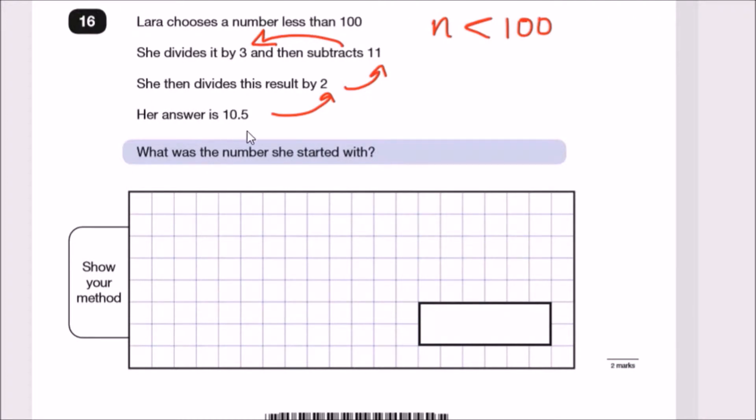Let's start from the back. It said that she divides a certain result by 2 and gets 10.5. So what you could do is instead of dividing by 2, multiply by 2. If you do that, 10.5 times 2 gives you 21. Let me put 21 here actually.